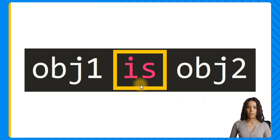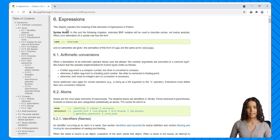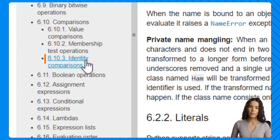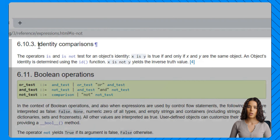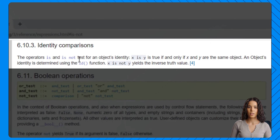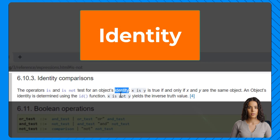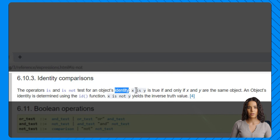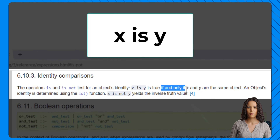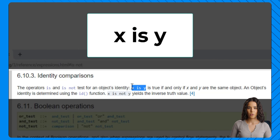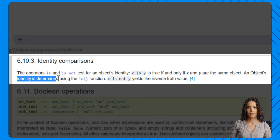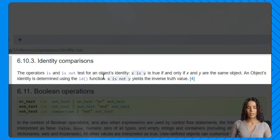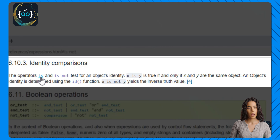Let's see what we can learn about this operator in the Python documentation. In the expressions article under 'identity comparisons', we see that the operators 'is' and 'is not' test for an object's identity. An object has a value, identity, and a type. The 'is' operator tests the identity: x is y is true if and only if x and y are the same object. An object's identity is determined using the id() function. When the ids are the same, 'is' will be true; when the ids are different, comparing with 'is' will be false. We can also use 'is not' to test if an object is not another object.